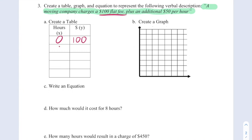Now, if they work one hour, they get an additional $50. So $150. If they work two hours, they get another $50. So $200. Another hour, three hours, $250. And another hour, four hours, $300. We're just making it go up by 50 every time.